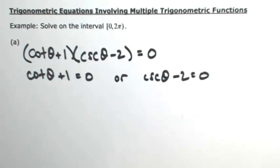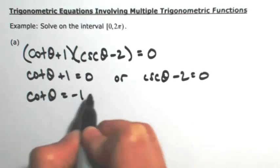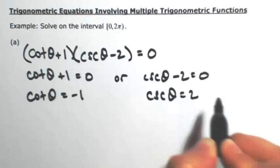So now getting theta by itself, I'm going to isolate each trig function. So the cotangent of theta is negative 1, or the cosecant of theta is 2.